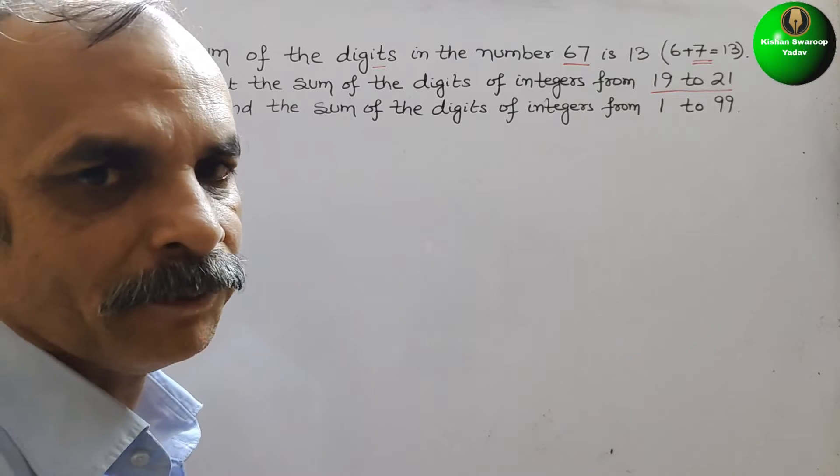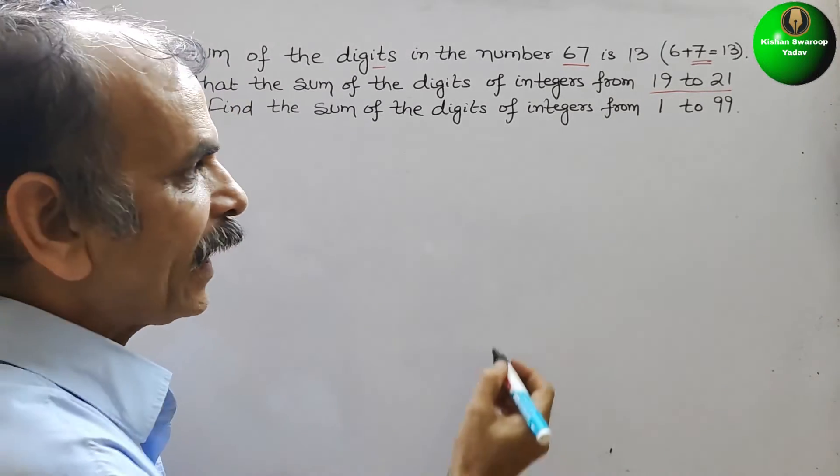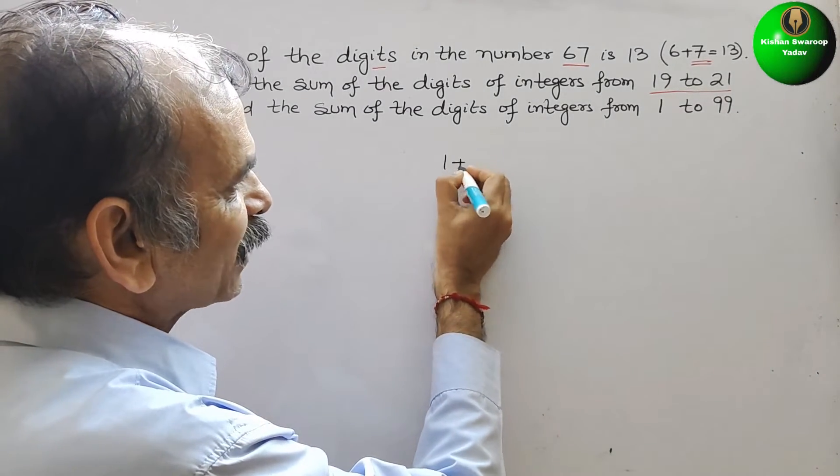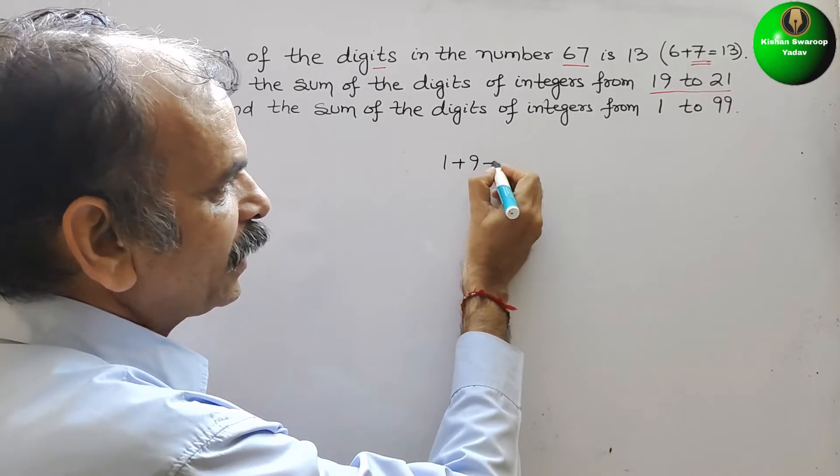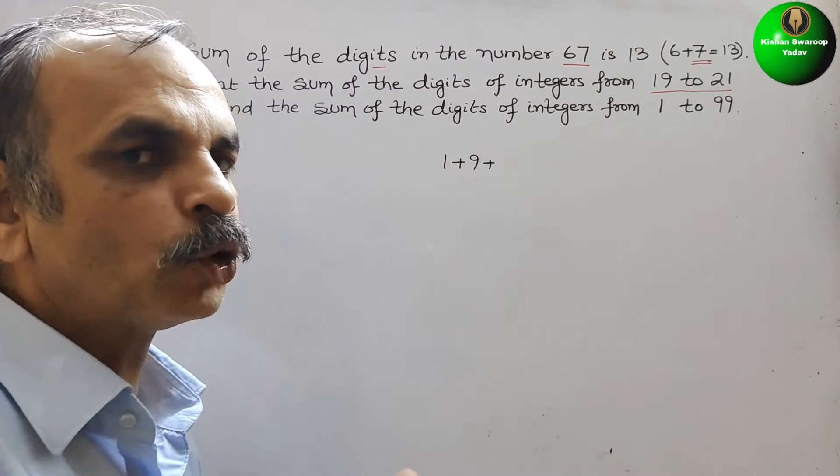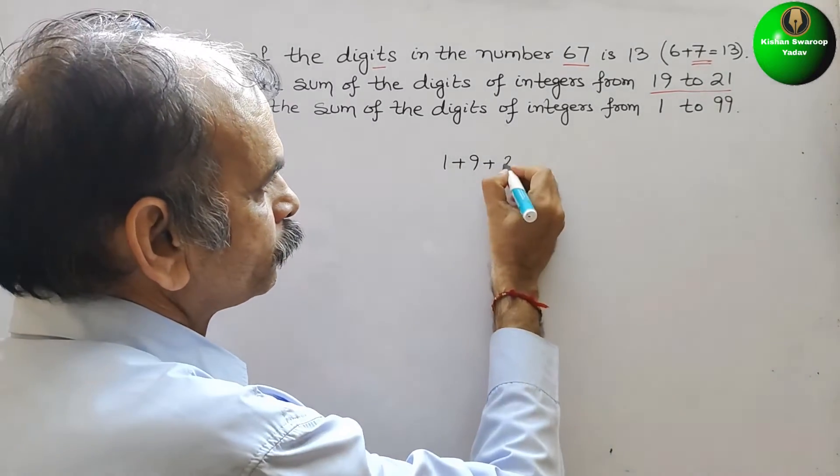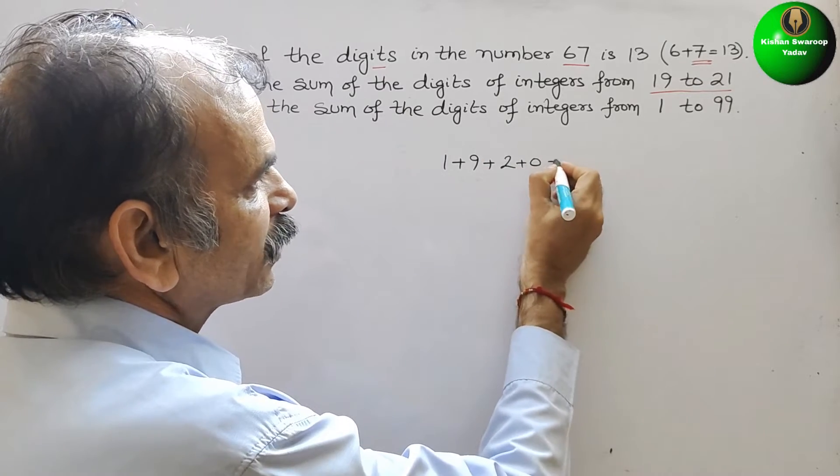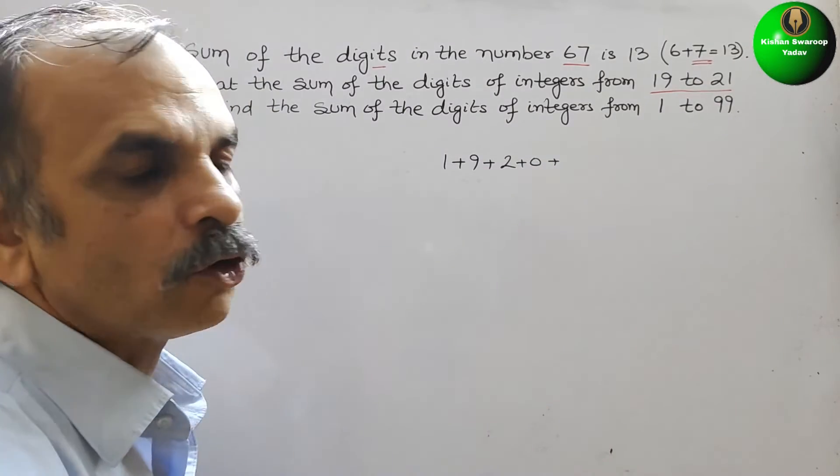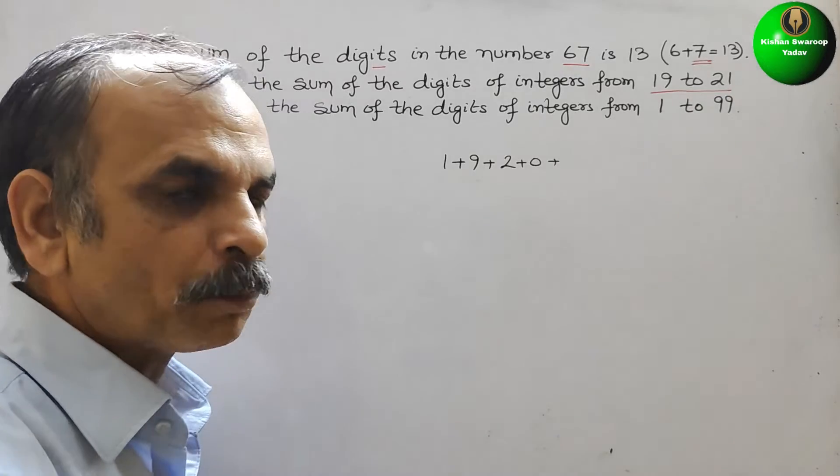So we will just add them. 19 means it will be 1 plus 9, plus 20 means 2 plus 0. Next, 21 is 2 plus 1.